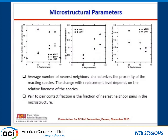The first property is the average number of nearest neighbors, which characterizes the proximity of the reacting species. At the microstructure level, particles react with each other, so if the proximity is greater, the reactivity will be higher — that's why finer particles have higher reactivities. The other two factors are the slag-limestone contact fraction and the cement-limestone contact fraction. Slag has a significant amount of reactive alumina, which can react with limestone to form monocarbo-aluminates. Cement has the C3A phase from which monocarbo-aluminates can also form, and limestone aids hydration by providing nucleation sites.